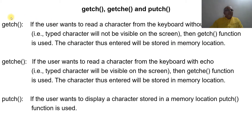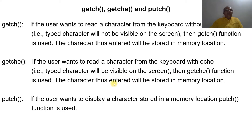That is the main function of getch. For getche, if the user wants to read a character from the keyboard with echo — that is, the typed character will be visible on the screen — then the getche function is used. The character entered will be stored in a memory location.